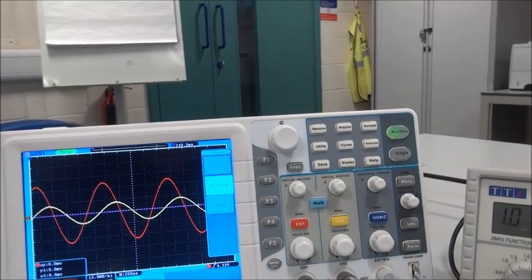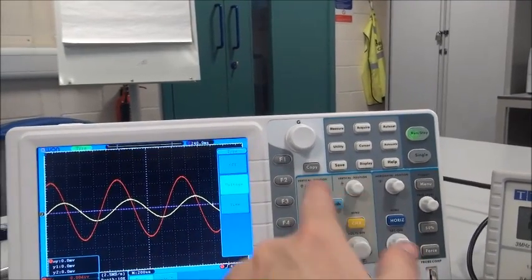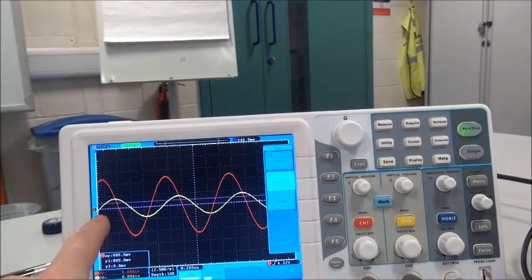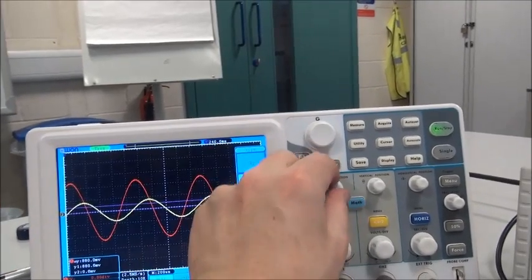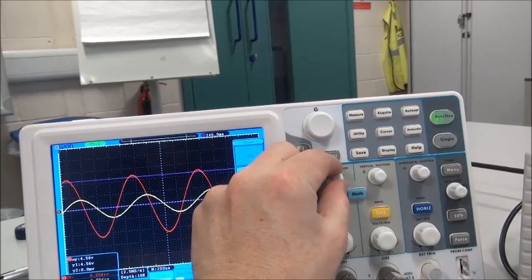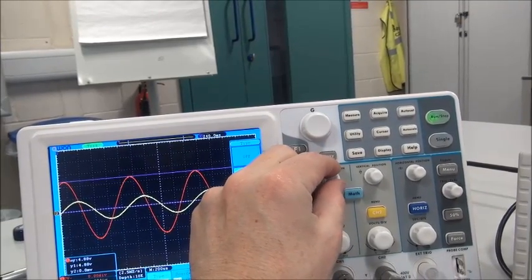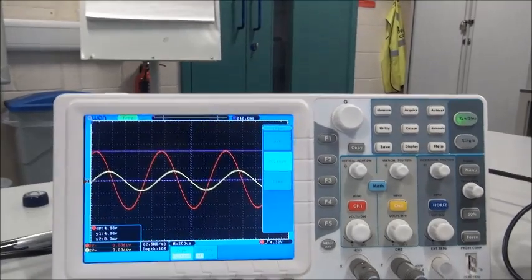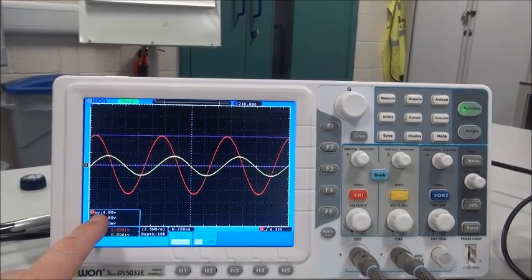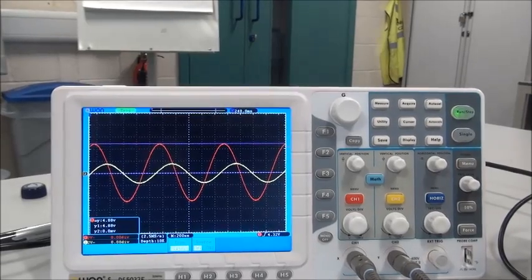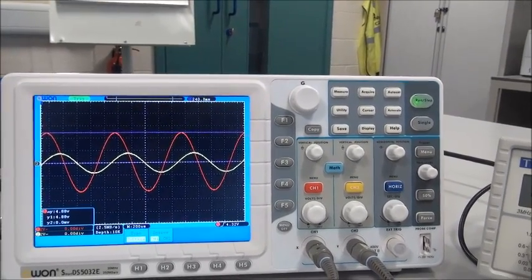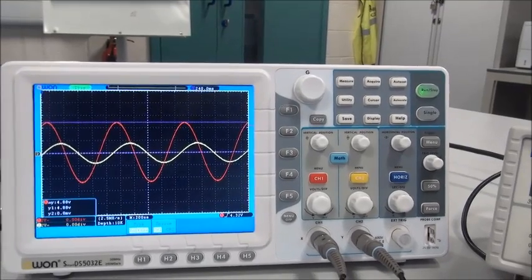And now the cursors go horizontal and I can use these two controls to adjust them. The first control here stays where it is and the second control moves up until we come to the peak there. You can clearly see the peak and we see delta Y, the change in Y is 4.88 volts which means that either my function generator isn't set up correctly or my cursor skills aren't as good as I thought they were.